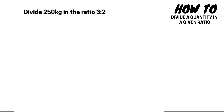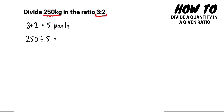This is a very similar question. We're going to start by adding the parts of our ratio together: 3 plus 2 is equal to 5 parts in total. We're going to divide our quantity — 250 kilograms — by the total number of parts, so 250 divided by 5 is equal to 50 kilograms.